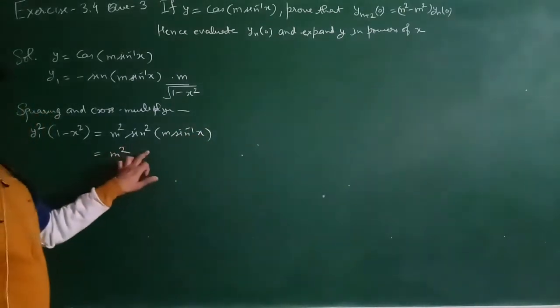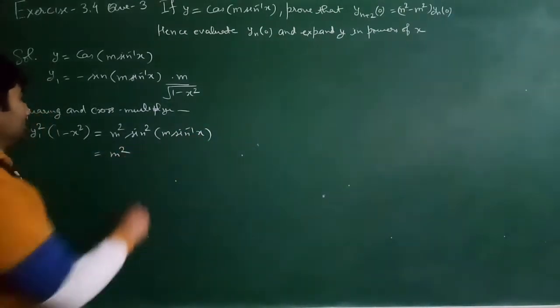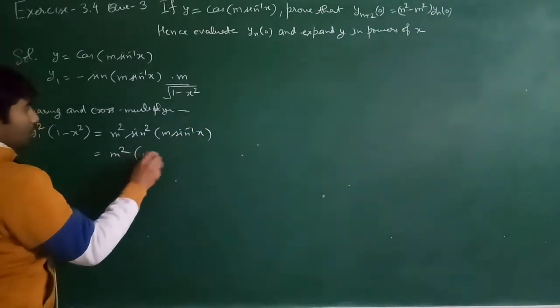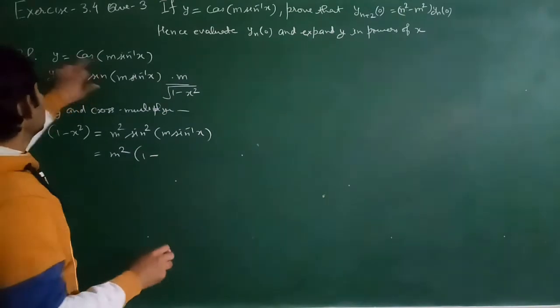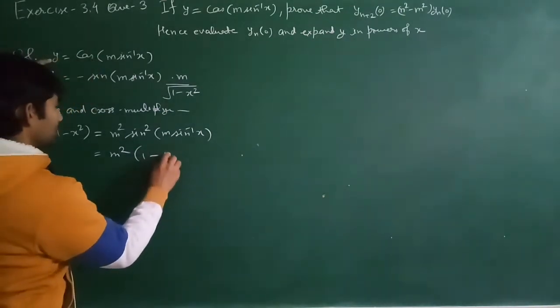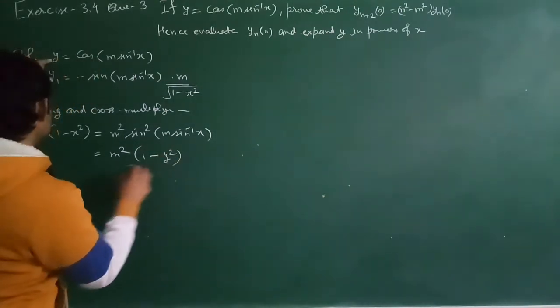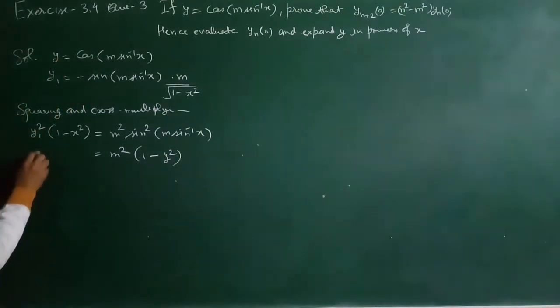Now squaring and cross-multiplying: y1² is equal to m²·sin²(sin⁻¹x). We write sin² as 1 - cos², and cos² as y², so we get y1²(1-x²) = m²(1-y²).